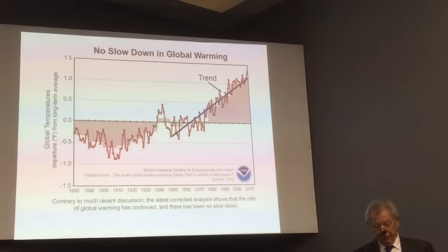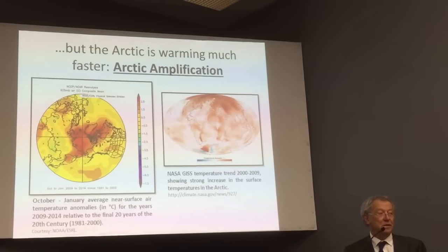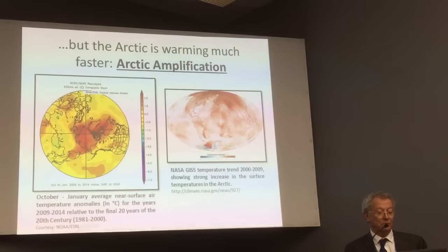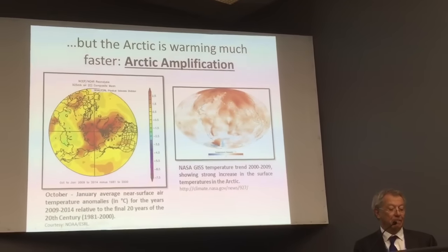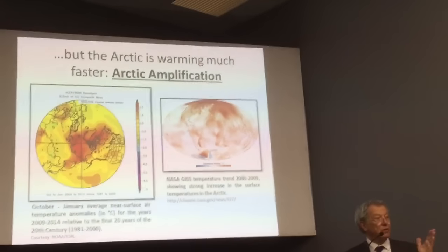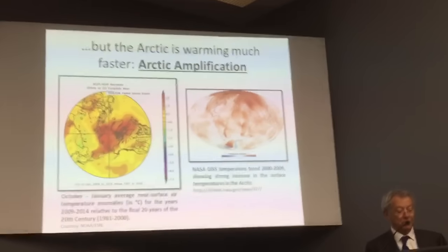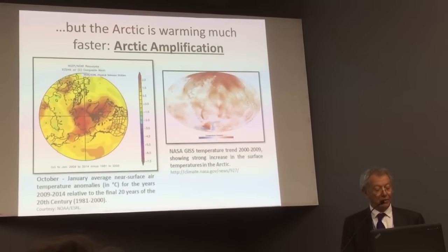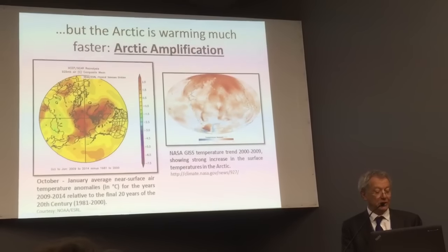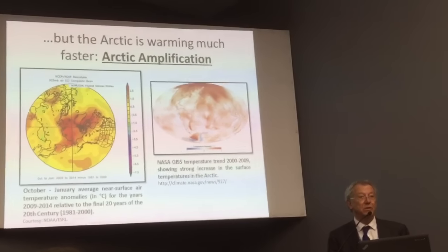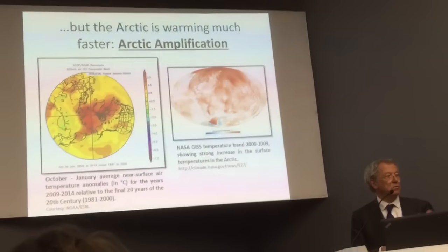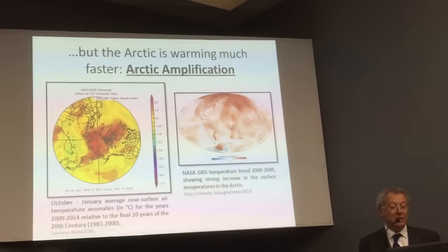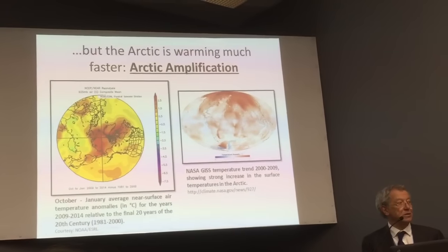What we do know from Arctic scientific studies is that the Arctic is warming faster than the rest of the planet on average. The left-hand figure shows the change in October–January average near-surface air temperatures for two different periods: the years 2009 to 2014 relative to the final 20 years of the 20th century, 1981 to 2000. Taking that recent period and comparing with 20 years over the past, we see that the Arctic region is warming significantly faster than the rest of the planet.